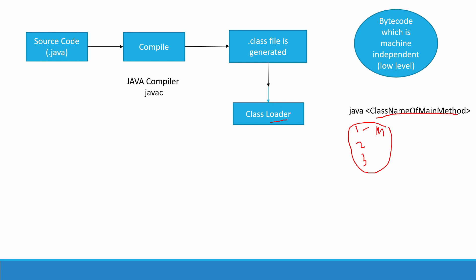The class loader will load all the classes which are required for the complete execution of a Java program. After the class loader, the next step is the bytecode verifier. The bytecode verifier basically checks: if we execute this code, will it create any damage? For example, if in a program we have used a variable before declaring it, this is a runtime error which the bytecode verifier will catch. If the bytecode provided is successfully verified, we move to the next step.